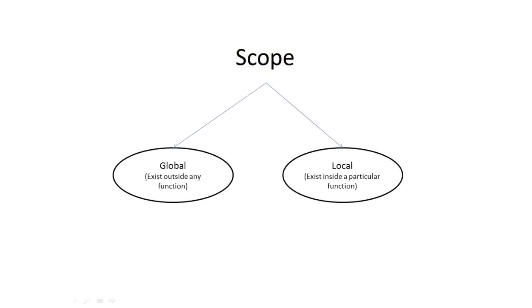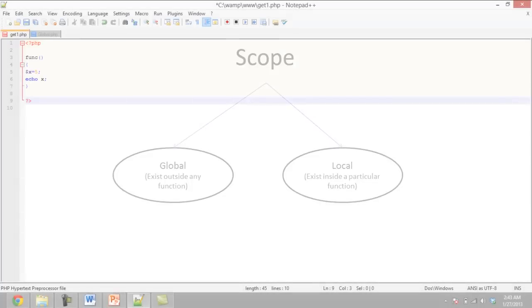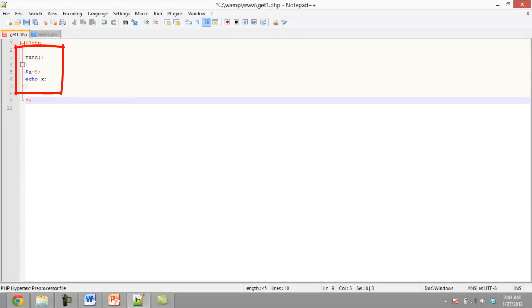A global variable exists outside of all PHP functions, while a local variable exists inside a particular function. An example of local variables is over here. And this is an example of global variables.